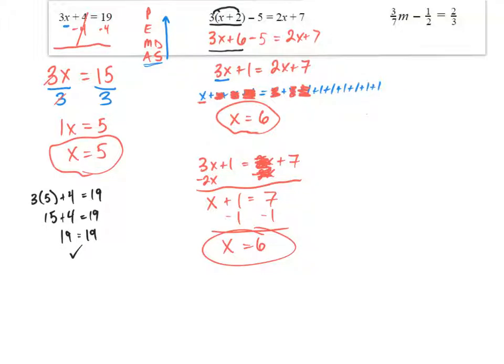For this final problem, we're dealing with fractions. We have 3 sevenths m, we need to isolate that m, minus 1 half equal to 2 thirds. This problem is really no different than the others. We could just add 1 half and then divide by 3 sevenths. If you're not comfortable with fractions, what we can do is actually use what's called the least common multiple. And what that allows us to do, if we can find the least common multiple of the denominators, we need to find a number that is divisible by 7, 2, and 3. I'm getting those values from the denominators.